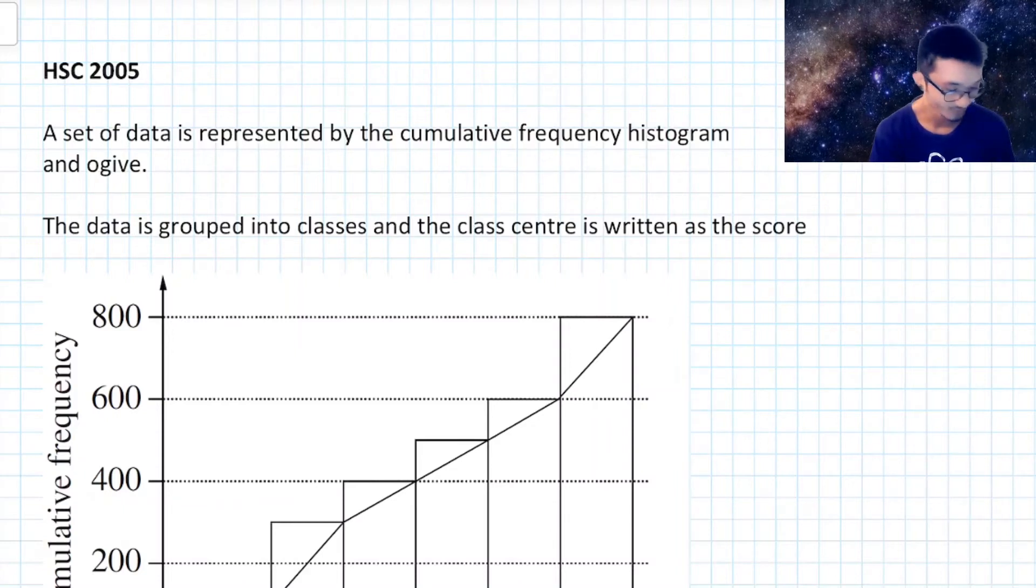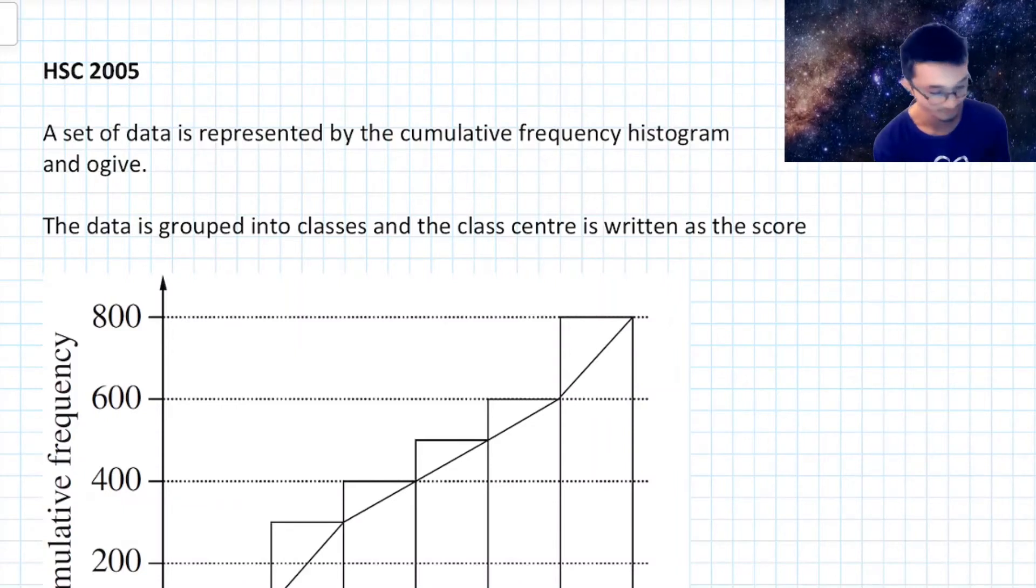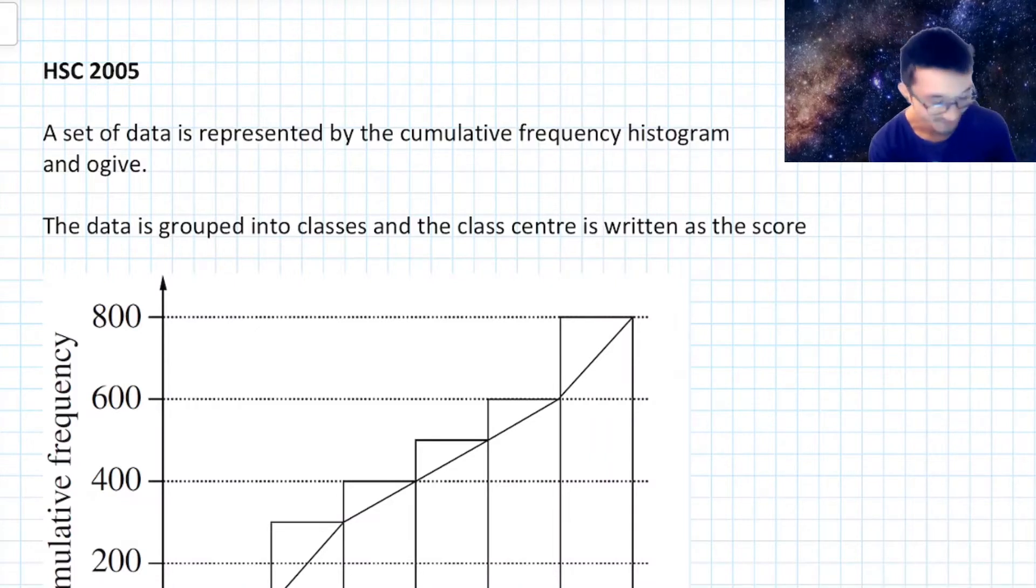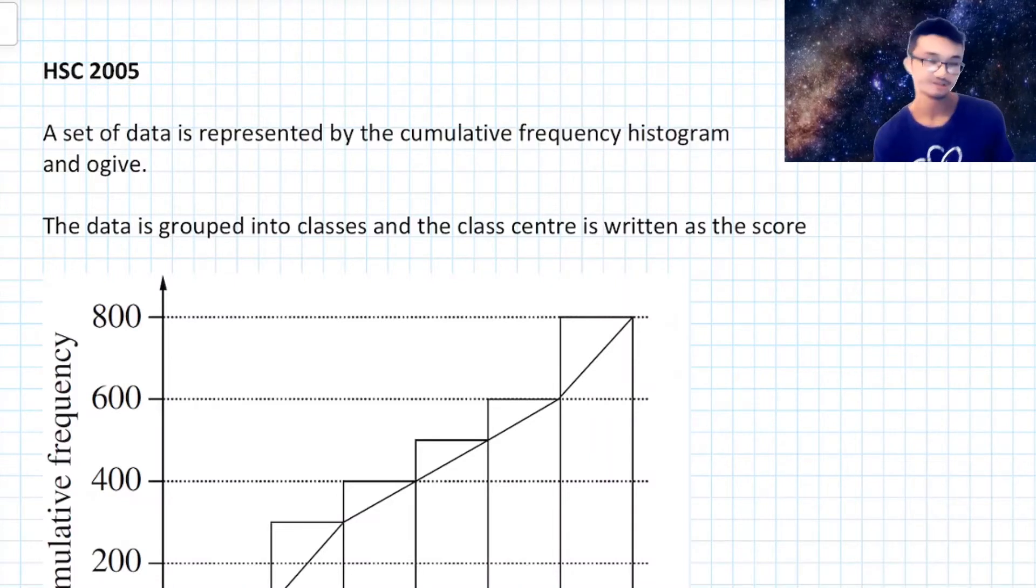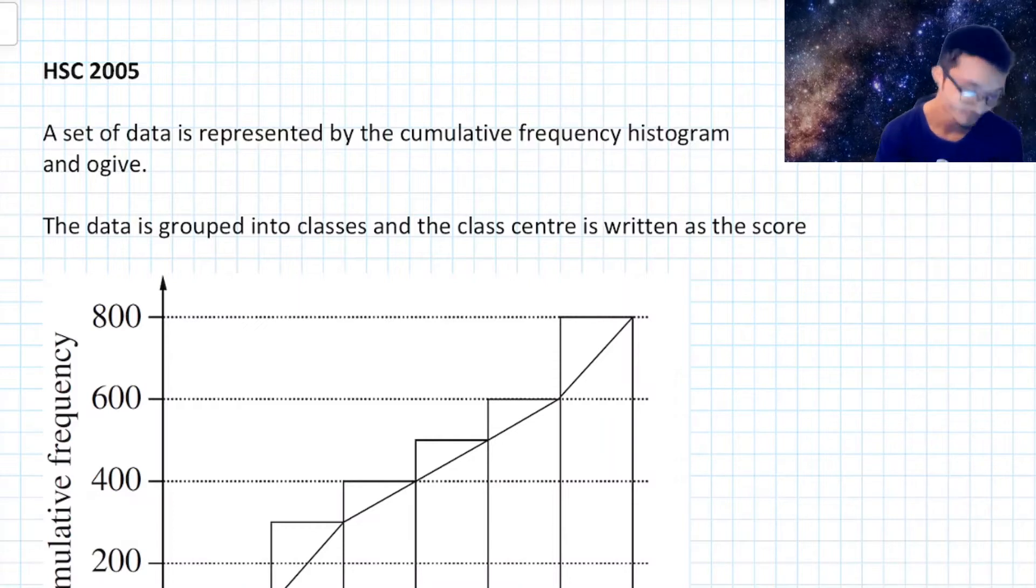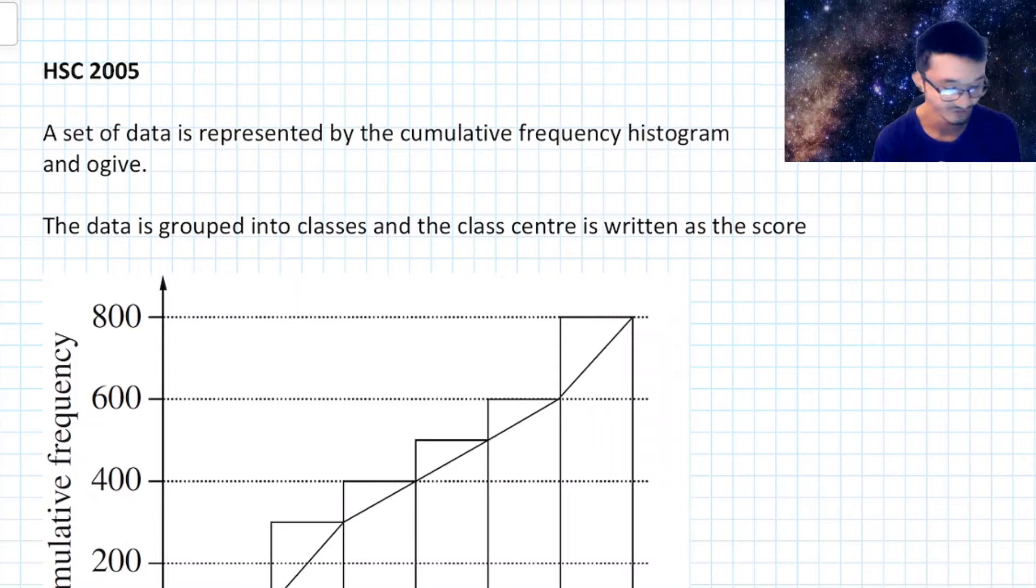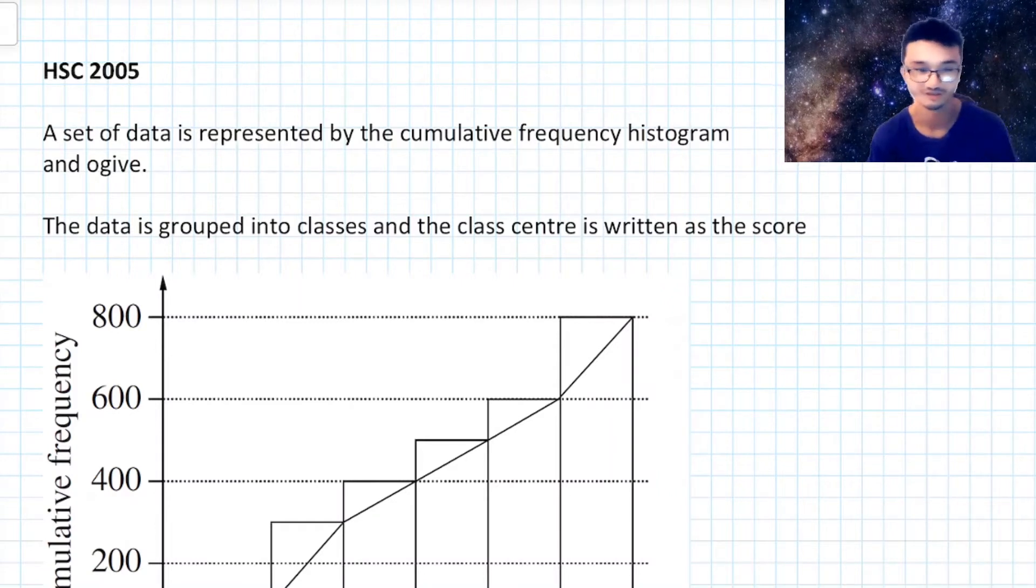Okay, so that's for box and whisker plots. What about now, let's look at some cumulative frequency histograms and ogive. We approach this in a slightly different way because it's not as clear-cut what actually is the interquartile range in this case, right?